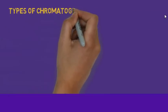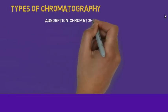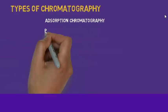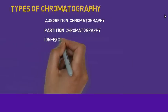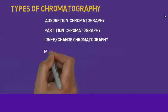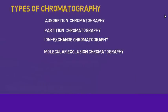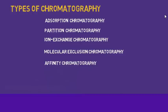The major types of chromatography are: adsorption chromatography, partition chromatography, ion exchange chromatography, and molecular exclusion chromatography. Now we are going to discuss each one.